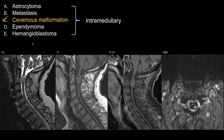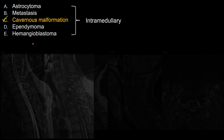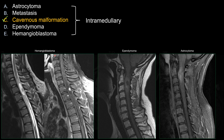The other three choices — hemangioblastoma, ependymoma, and astrocytoma — all tend to enhance. Hemangioblastoma especially tends to enhance avidly, while ependymoma and astrocytoma enhance to various degrees. Obviously that is a generalization, but for the purpose of a board exam, I would consider all three should enhance, especially hemangioblastoma.